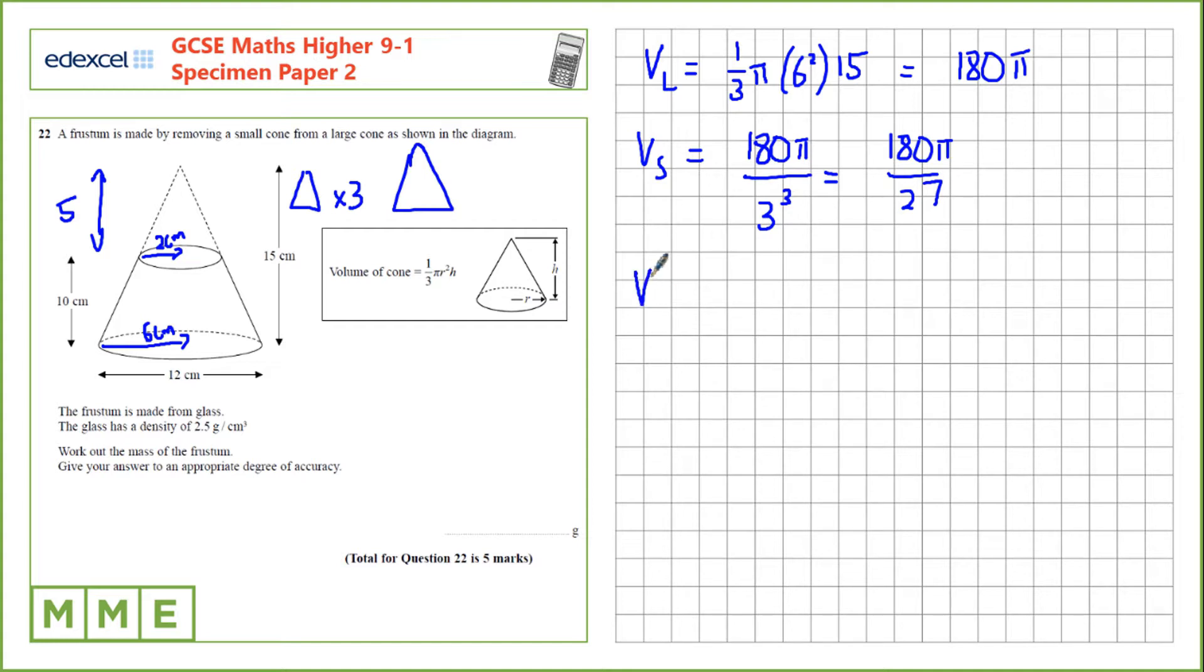So, the volume of the frustum, I'll call that VF, is the difference between these two. The difference between those on a calculator, if we do 180 take 180 over 27, that's 520 over 3 pi.